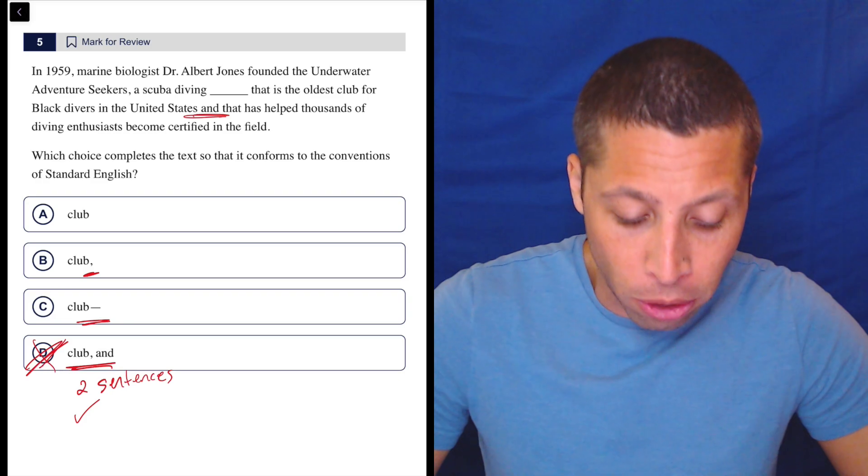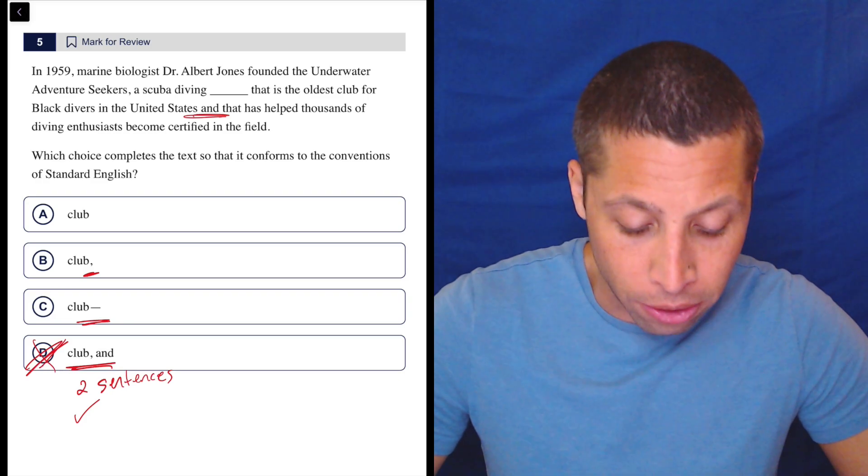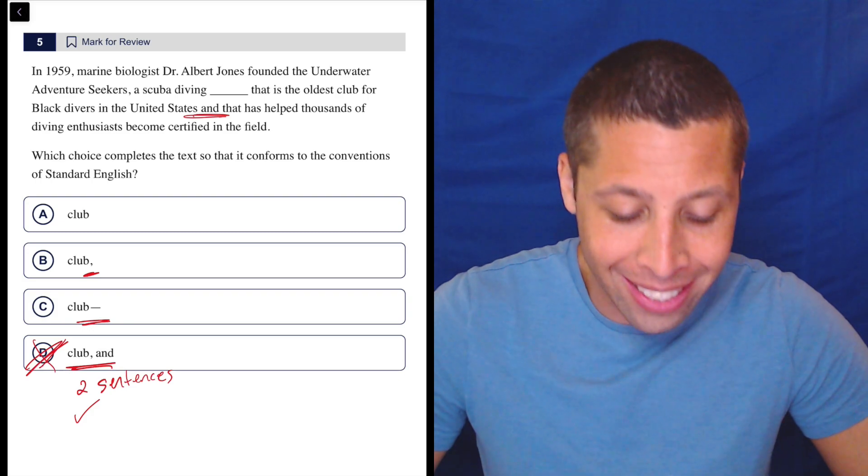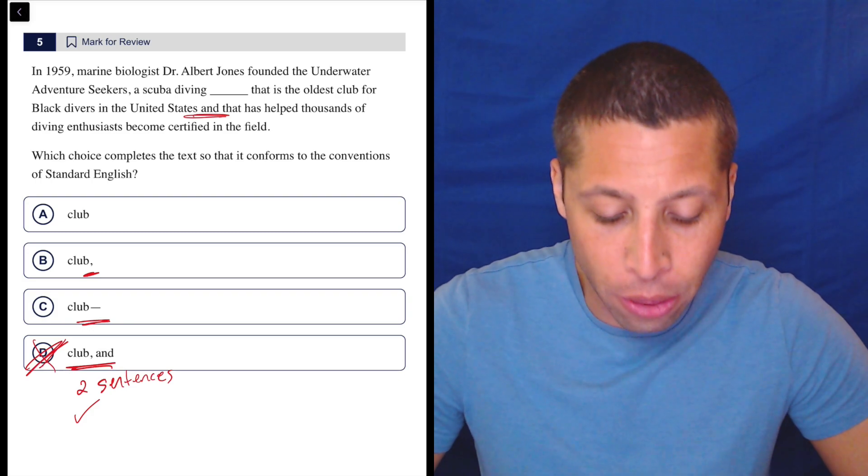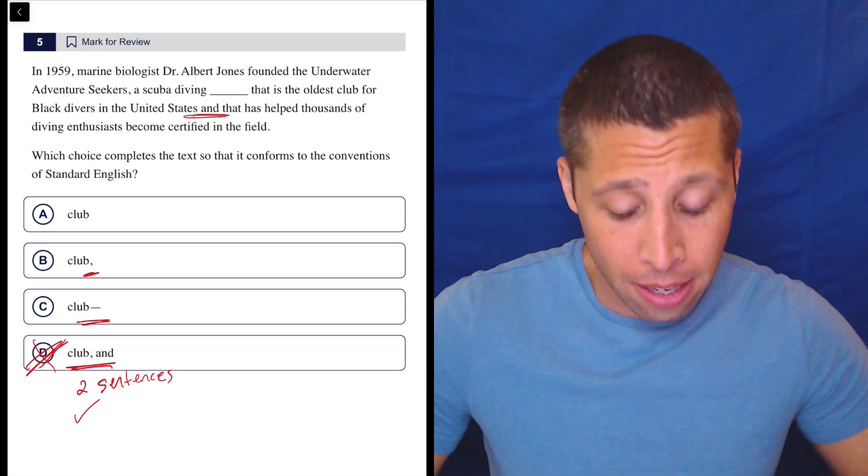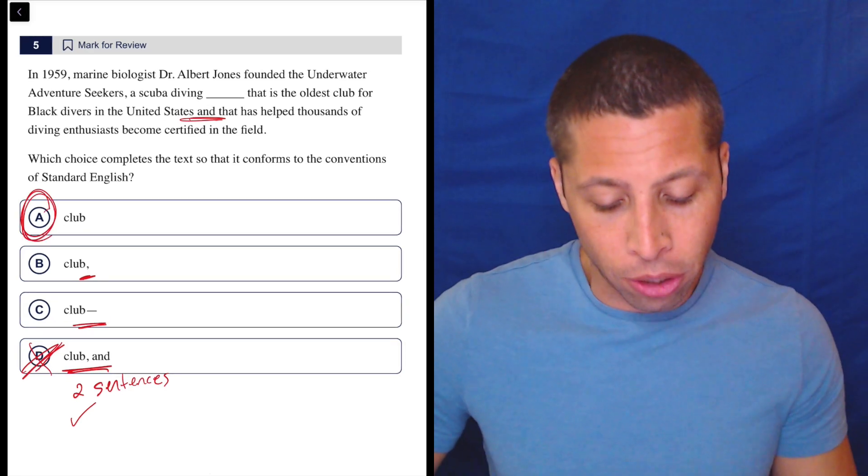Marine biologist Dr. Albert Jones founded the Underwater Adventure Seekers, a scuba diving club that is the oldest club for black divers in the United States and that has helped thousands of diving enthusiasts become certified in the field. It's still a little clunky, but I understand it. A is the answer here.